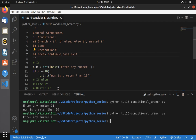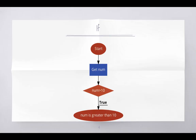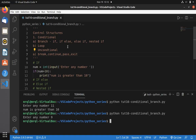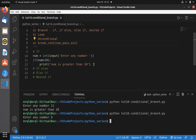Now let me switch to the slide. This is an if-else example. The flow is the same — it will get the number and check if number is greater than 10. If number is greater than 10 then it will print 'num is greater than 10'; otherwise it will print 'num is less than or equal to 10'. This we are going to implement in Python.